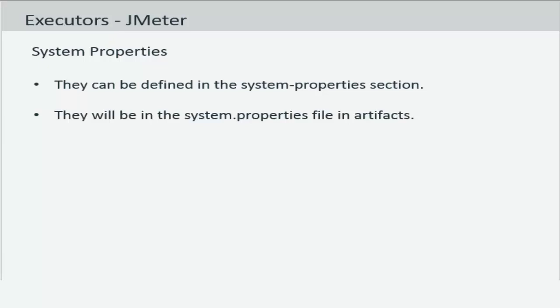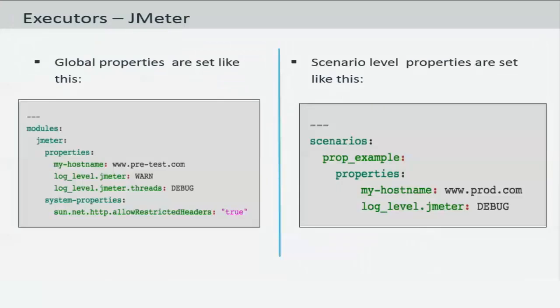Let's take a look at an example. If you would like to set some JMeter properties at the global level then you can set it at the module level for JMeter. For example, in the first example on the left side you're setting the host name, the log level, the log level for threads, and the system property for JMeter at a global level.